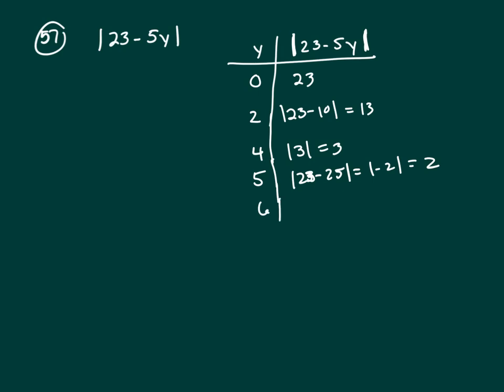Let's see what happens at 6. 23 minus 30, that's not going to work, that's going to be bigger.